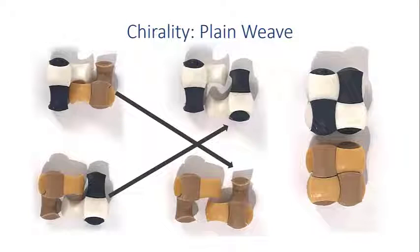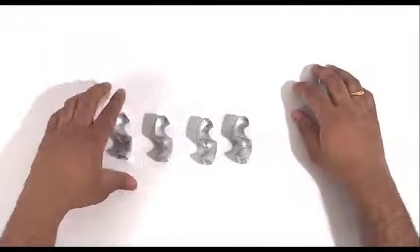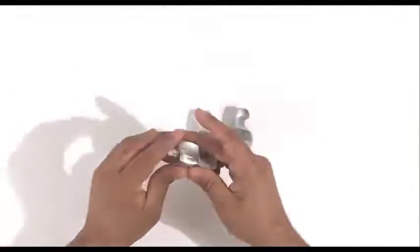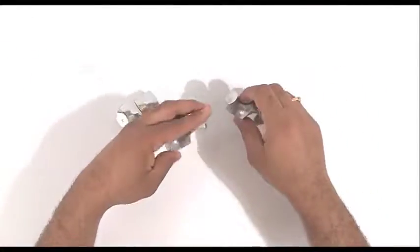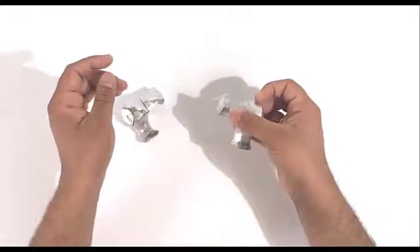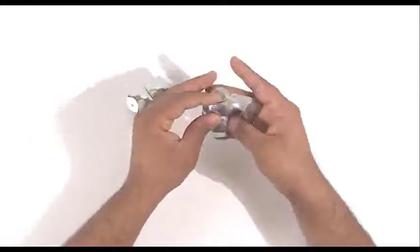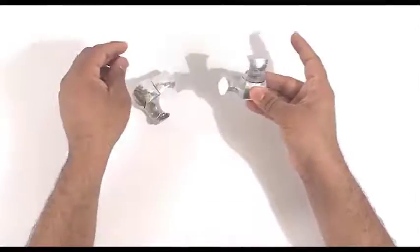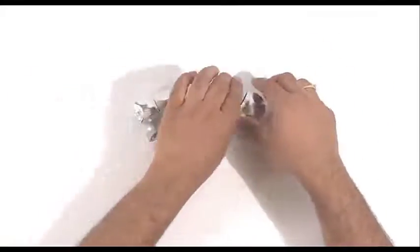It is even possible to obtain assemblies that exhibit chirality — that is, the assembly has a non-superimposable mirror image. This is a demonstration of chirality with plain woven aluminum tiles. If we have two configurations that are chiral, the shapes don't interlock.